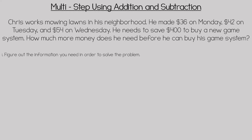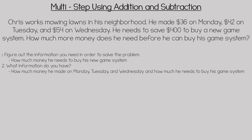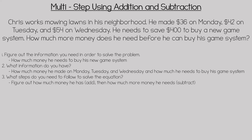First, we need to figure out the information we need in order to solve the problem. We need to know how much money he needs to buy his new game system. Next, we need to figure out what information we have — we know how much money he made on Monday, Tuesday, and Wednesday, and we also know how much money he needs to buy his new game system. Third, we determine what steps we need to do to solve the equation: add the daily earnings together, then subtract to find how much more money he needs.